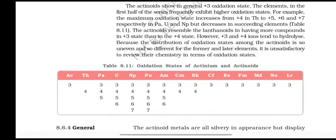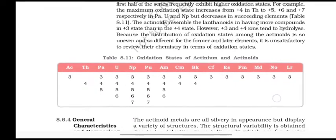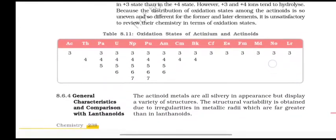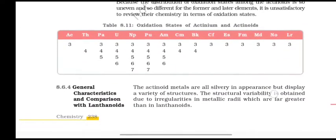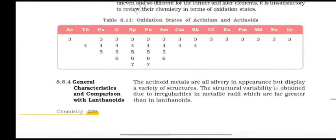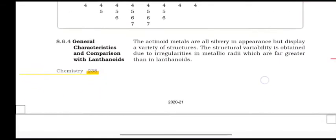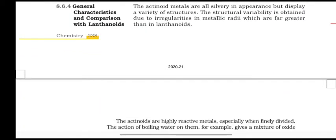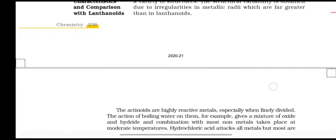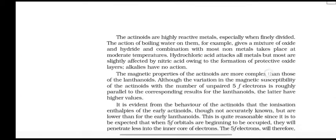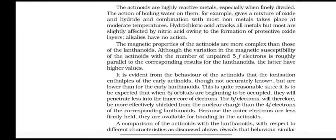The actinoids resemble the lanthanoids in having more compounds in +3 state, but because the distribution of oxidation states among the actinoids is so uneven and so different for the former and later elements, it is unsatisfactory to review their chemistry in terms of oxidation states. General characteristics and comparison with lanthanoids: the actinoids are all silvery in appearance but display a variety of structures. The structural variability is obtained due to irregularities in metallic radii which are far greater than in lanthanoids. The actinoids are highly reactive metals, especially when finely divided.